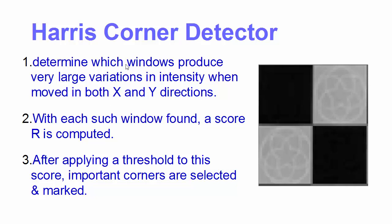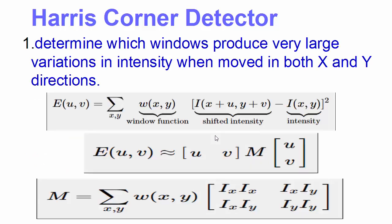Let me explain these steps one by one. In the first step, we determine which windows produce very large variation in the intensity in the X direction and Y direction. Let's say a window or center is located at position x,y and the intensity of the pixel at this location is I(x,y).